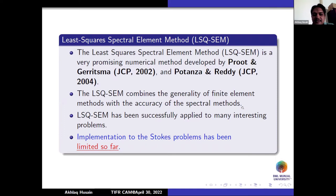The least-square spectral element method is a promising numerical method developed by Proot, Gerritsma, Pontaza, and Reddy in a series of papers in the Journal of Computational Physics. It combines the generality of the finite element method with the accuracy of the spectral element method — a kind of hybrid method. Several papers over the last two decades have applied it to interesting problems; however, implementation for Stokes problems has been really limited.